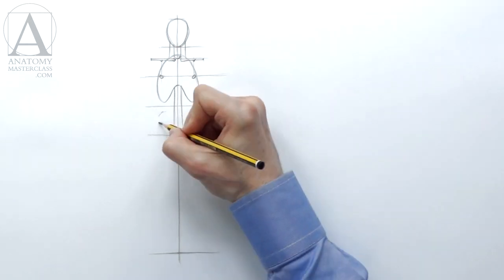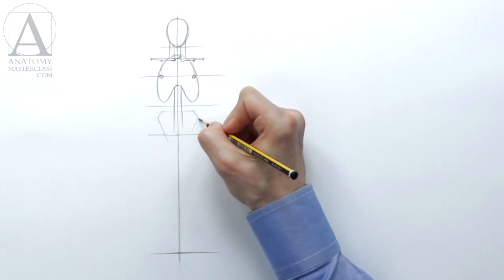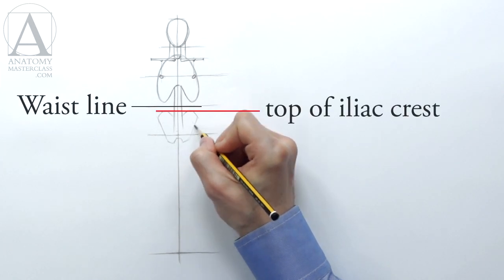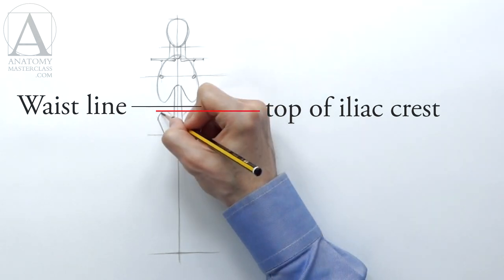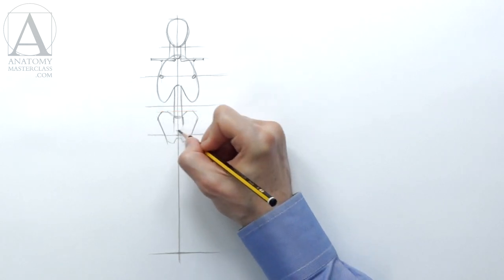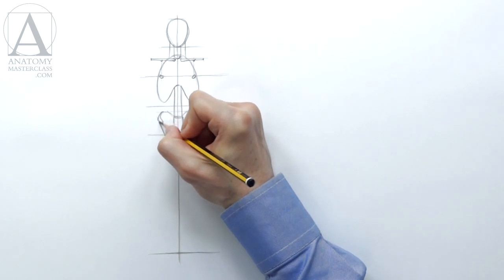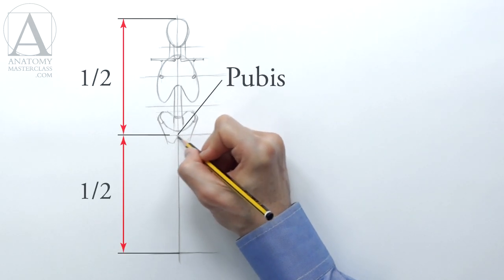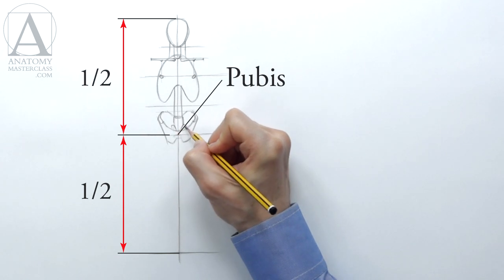The spine runs along the medial line. I will outline the pelvis. The upper border of the pelvis, or top of the iliac crest, is located slightly below the waistline. You will see a separate video lesson on pelvic anatomy, so we will skip it for now. The pubis is located exactly in the middle of the male figure with classical proportions.